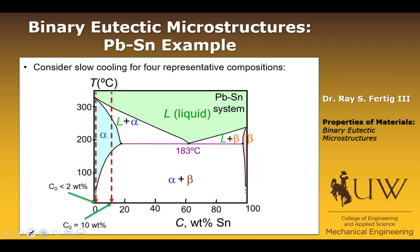Then we're going to look at a composition of 10 weight percent tin. This will be a little bit different because unlike the binary isomorphous material, as we're cooling, we cross the liquidus boundary into the liquid plus alpha region, then cross the solidus boundary going from liquid plus alpha into alpha. But crossing this solvus boundary is unique to the binary eutectic microstructure — we did not see that in the isomorphous system.